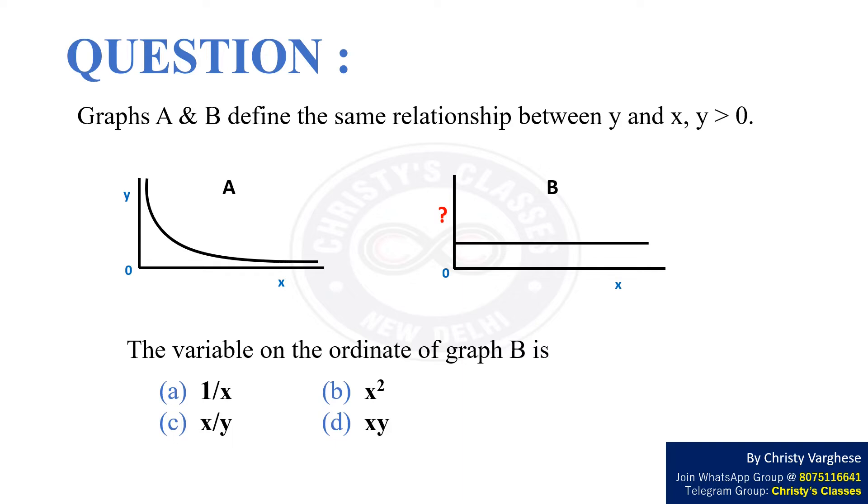Graphs A and B define the same relationship between y and x, where y is greater than 0. The variable on the ordinate of graph B is: option a, 1 by x;